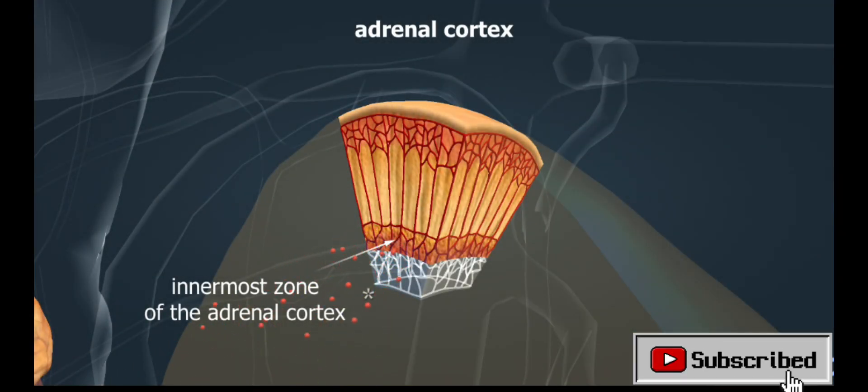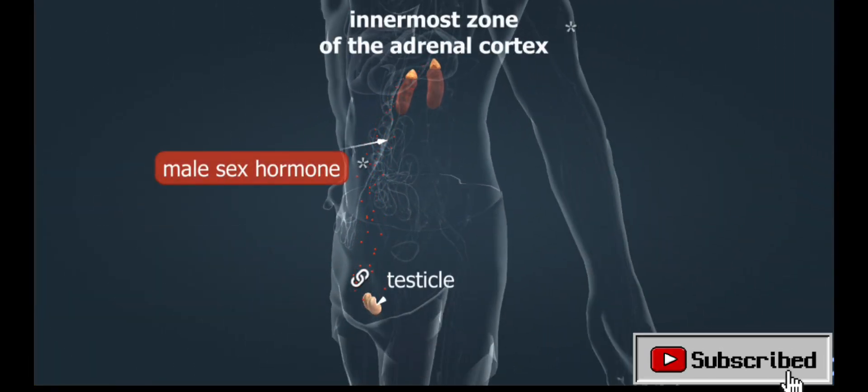The innermost zone of the adrenal cortex produces sex hormones, mainly male sex hormones in both sexes.